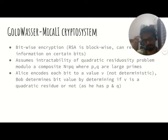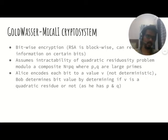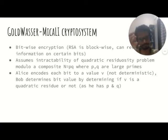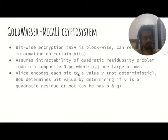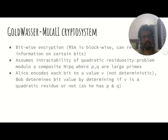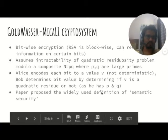Bob can only decode if he has p and q, where n is the product of two very large primes p and q. The public key is n — anyone knowing n can use this algorithm to encode a message. The private key, held by Bob, is the factorization of n into p and q. Factorizing very large numbers is computationally infeasible. So this algorithm is probabilistic, asymmetric, and was the first provably secure public key encryption scheme.